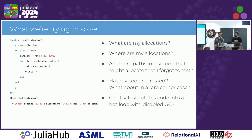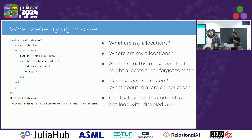Am I covered? I eliminated the allocations in part of my code, but maybe there is a corner case that actually allocates. How do I make sure that I made my code allocation-free but it can regress? And the cool thing Cody touched on — can I disable the GC because I have a control loop that cannot be paused? To disable the GC, you need to be sure that you're not actually allocating anything.